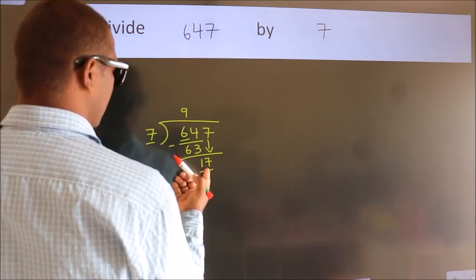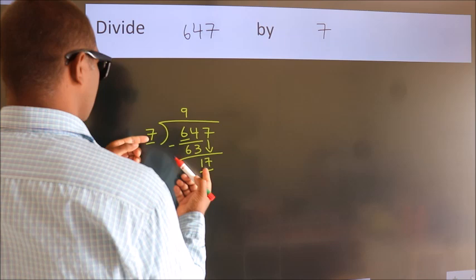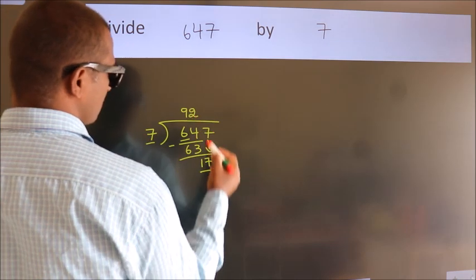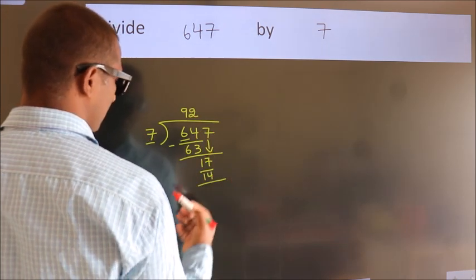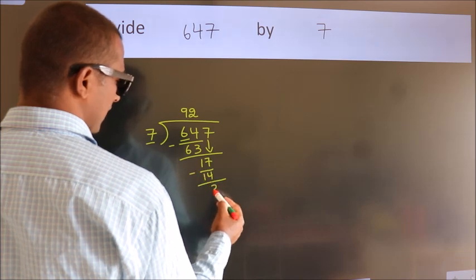A number close to 17 in the 7 times table is 7 twos, 14. Now we subtract. We get 3.